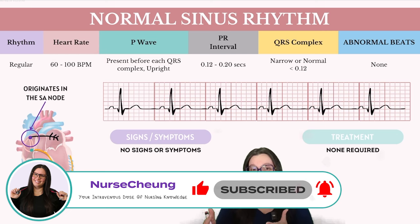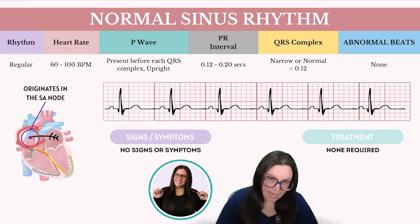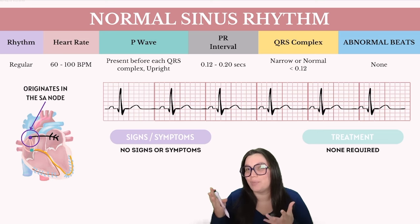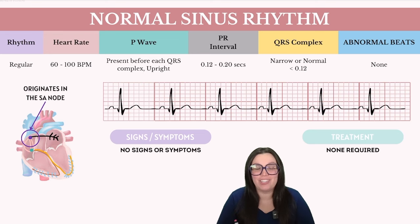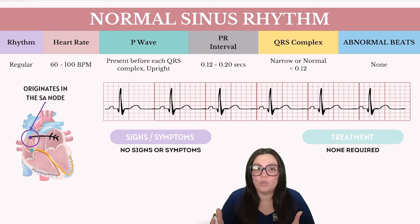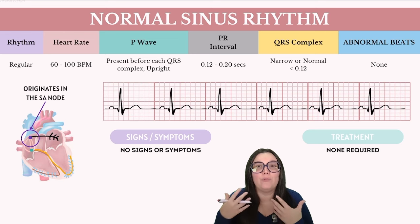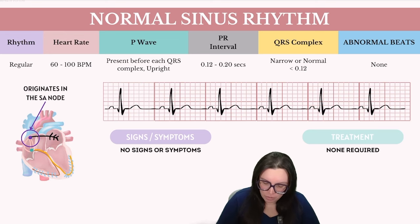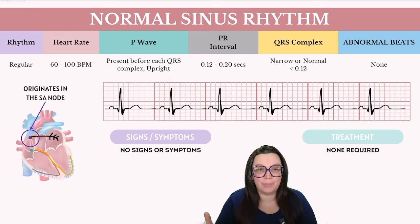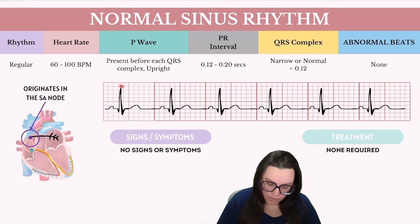This kind of rhythm indicates that the sinoatrial node is functioning as the primary pacemaker. The assumption here is that the SA node is initiating the atrial depolarization under normal conditions. For a rhythm to be classified as normal sinus, it must maintain a regular pattern known as regularly regular, and this is verified by the measurement of R to R segments.